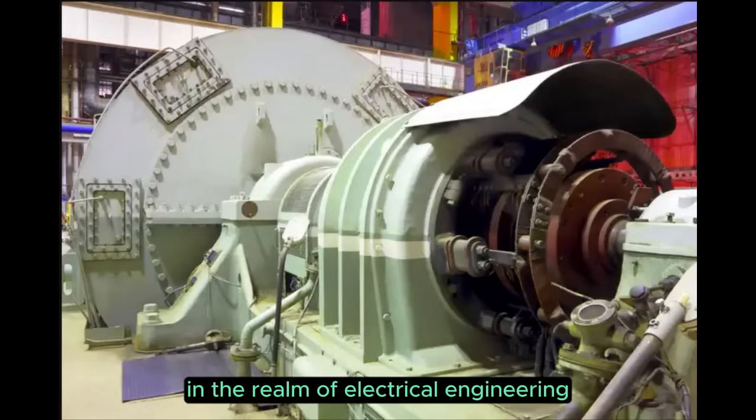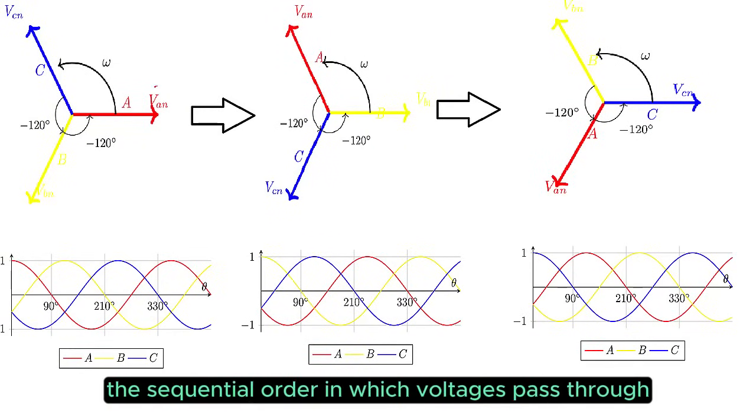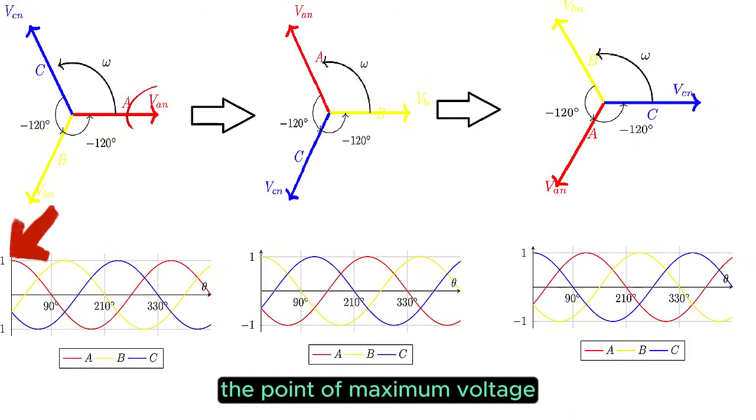In the realm of electrical engineering, generators and coil placements dictate two distinct phase sequences. It's imperative to scrutinize the setup closely. Let's begin by defining phase sequence as the sequential order in which voltages pass through the zero-phase point, the point of maximum voltage.